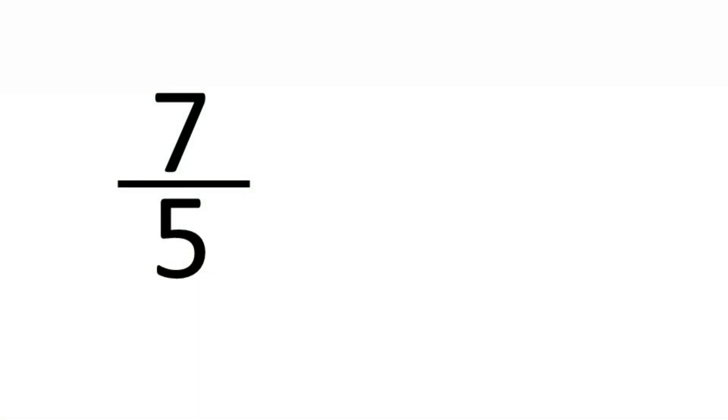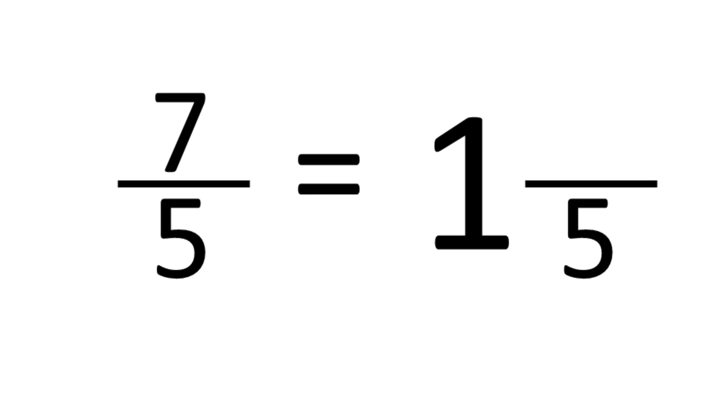The top number is bigger than the bottom number, so it's an improper fraction. And we can choose to simplify this and express it as a mixed numeral. And the way you do this is to say how many times does 5 go into 7? The answer is 1 with 2 left over, so it's 1 and 2 fifths.